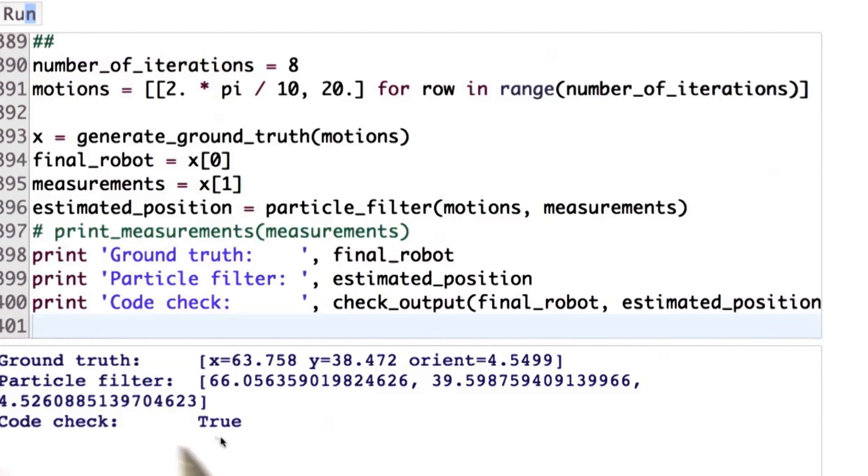Now, it could happen that the code check says false. I just ran it 20 times and said true for me every single time, but I've seen it say false. And the reason is it's a randomized algorithm, it's a particle filter. It might actually not have a particle at the right place.